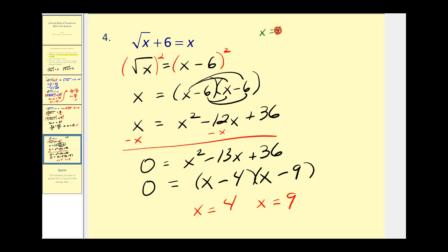Let's check x equals four first. We'd have the square root of four plus six equals four. Well, this doesn't work, that would be two plus six equals four. That's not true, which means this is one of those extraneous solutions. So we cannot include that as a solution.